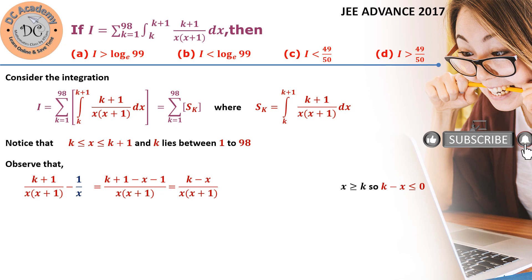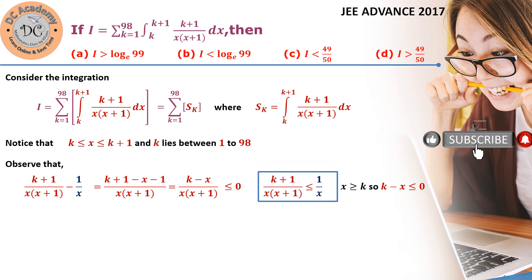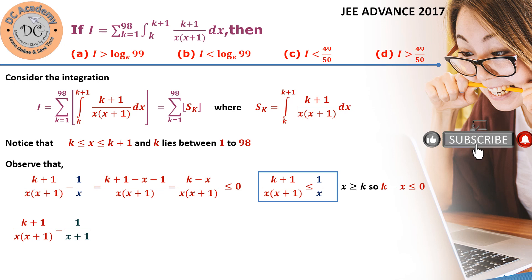Since the domain of analysis is k to k+1, we have k ≤ x, so x ≥ k. Therefore k minus x is less than 0, which means the difference is less than 0. This implies that (k+1) divided by x(x+1) is less than or equal to 1/x.